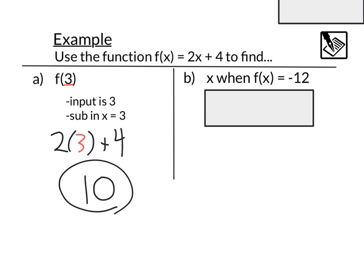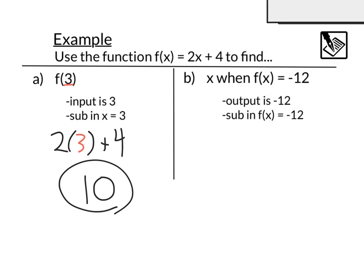We can also find x if we know what f of x is, like if we wanted to find x where f of x equals negative 12. So in this case, we know the output is negative 12, or that f of x is negative 12, and we're going to sub in negative 12 for that value. So instead of f of x, we can set up an equation here, negative 12, that's replacing this f of x, negative 12 equals 2x plus 4. So everything's the same, just switching out f of x for negative 12. And if we solve this, subtract 4 both sides, divide by 2, it looks like we're going to get an x value of negative 8.